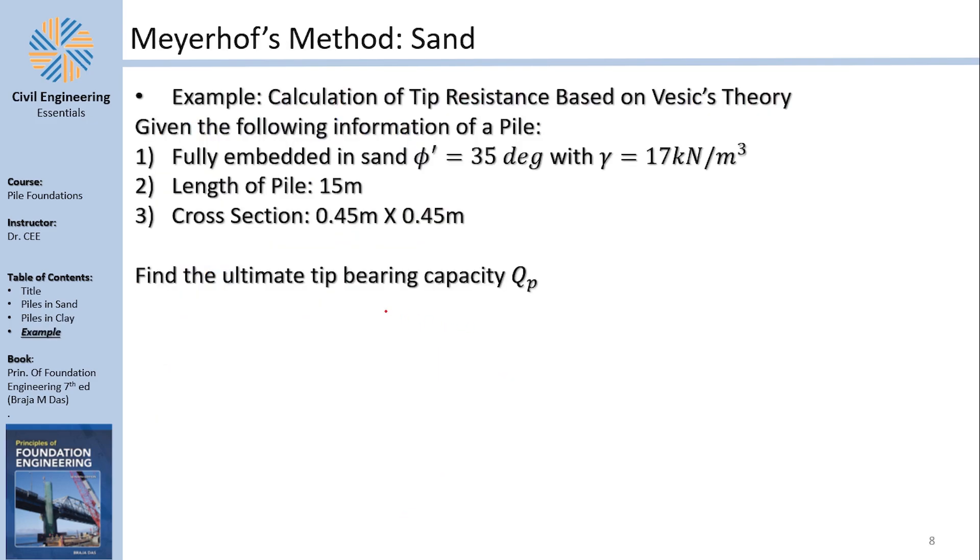Anyway, if you want to continue, this is an example that we want to talk about. Of course, here, this is Vesic. This is the same example of Meyerhof, but this time, we are applying it on Vesic. We want to calculate the tip resistance based on Vesic's theory, given the following information, which are the same, by the way. It's fully embedded in sand. It's 35 degrees friction angle. γ is 17. Length of pile is 50, and the cross section is a rectangle.